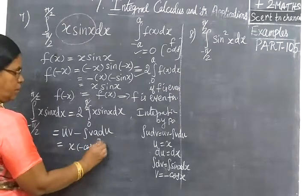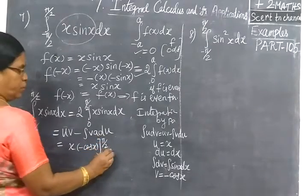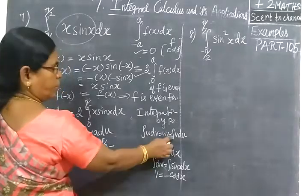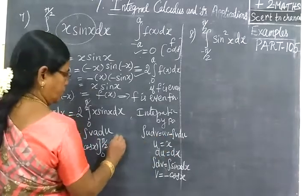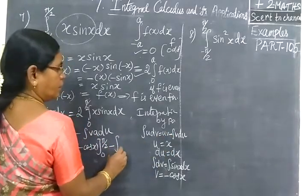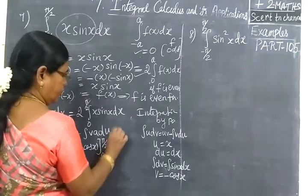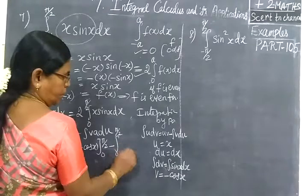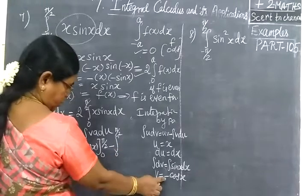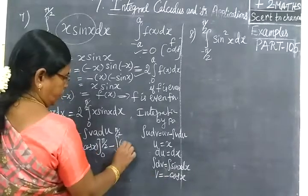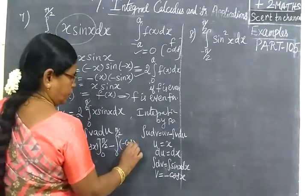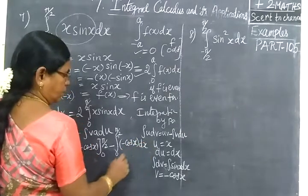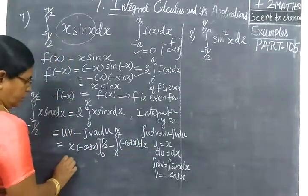Now substituting: u·v minus integral of v·du gives x·(minus cos x) evaluated from 0 to 5π/2, then minus the integral from 0 to 5π/2 of (minus cos x) dx, which simplifies to plus the integral of cos(x) dx.